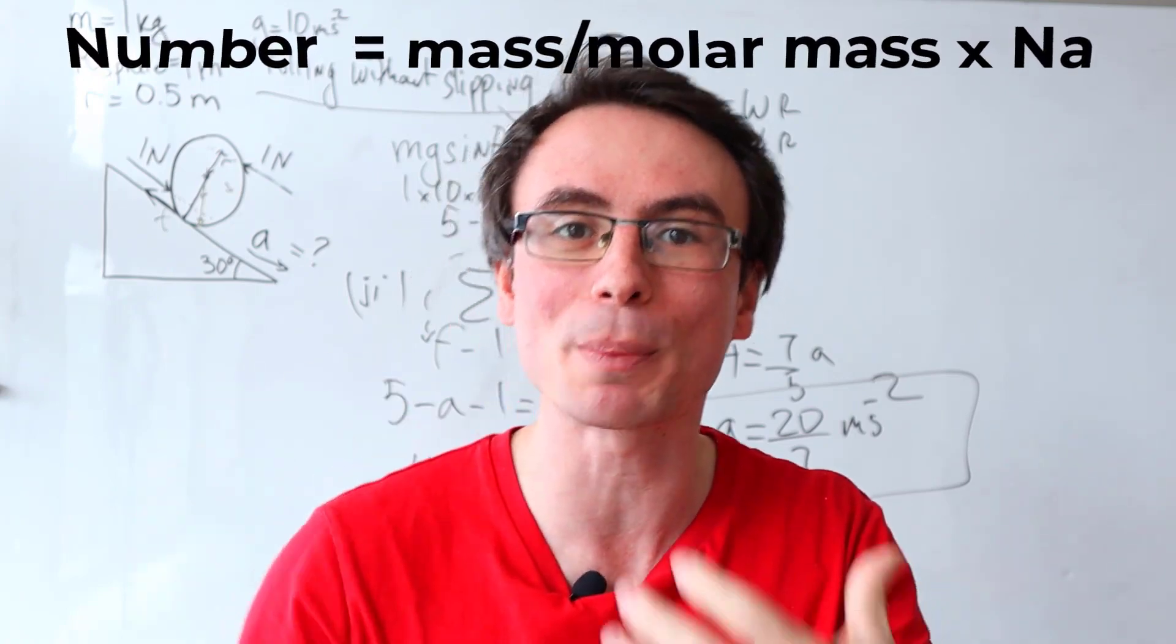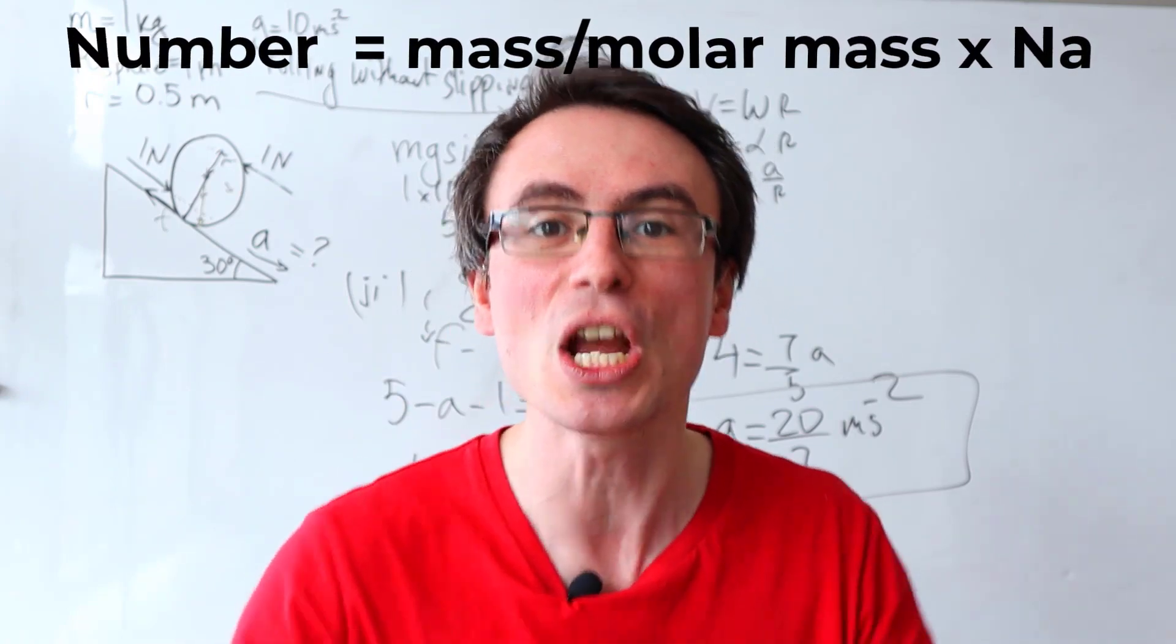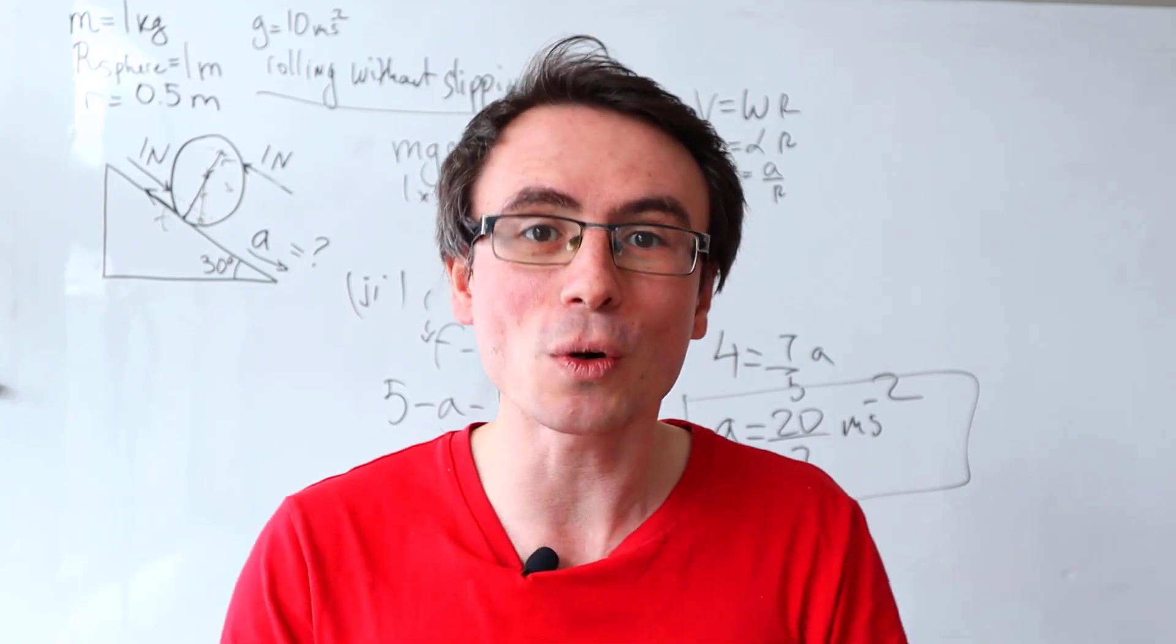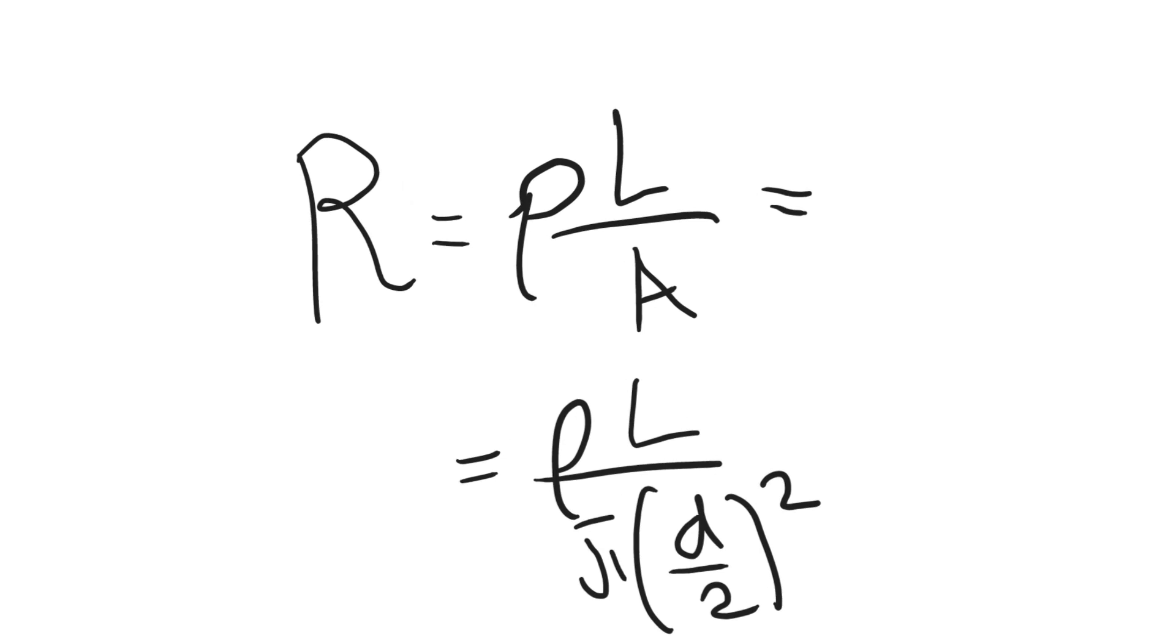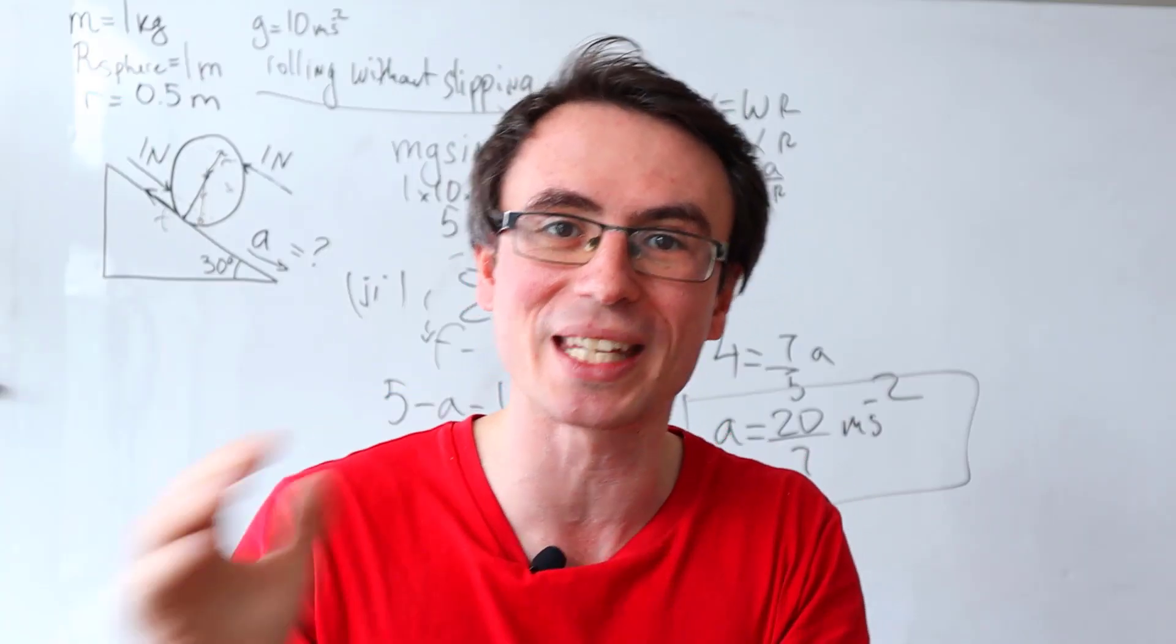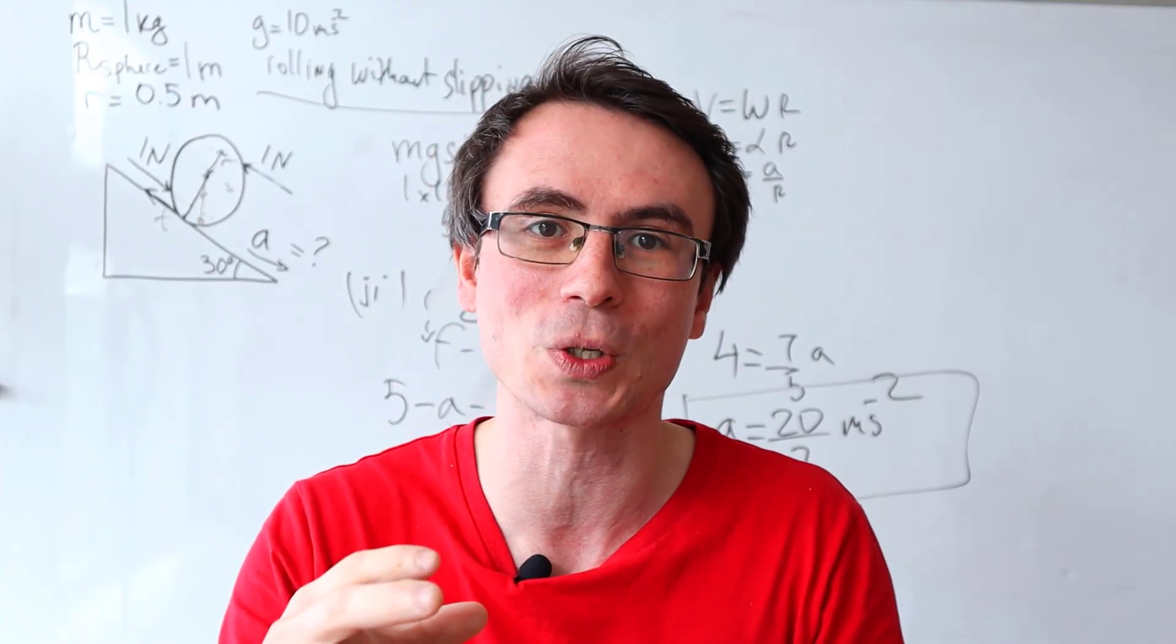This number could then be used to be multiplied for instance by the energy or something else. If you come across a wire and a diameter you will need to use the resistivity equation and you can start thinking about how to involve it in the question.